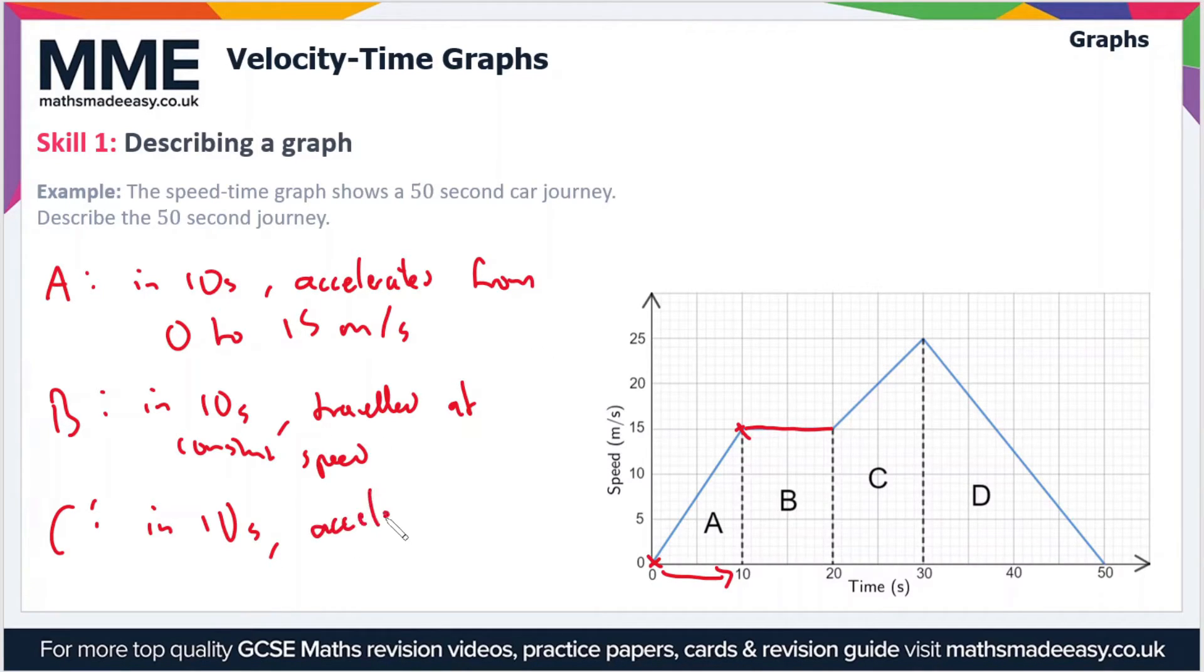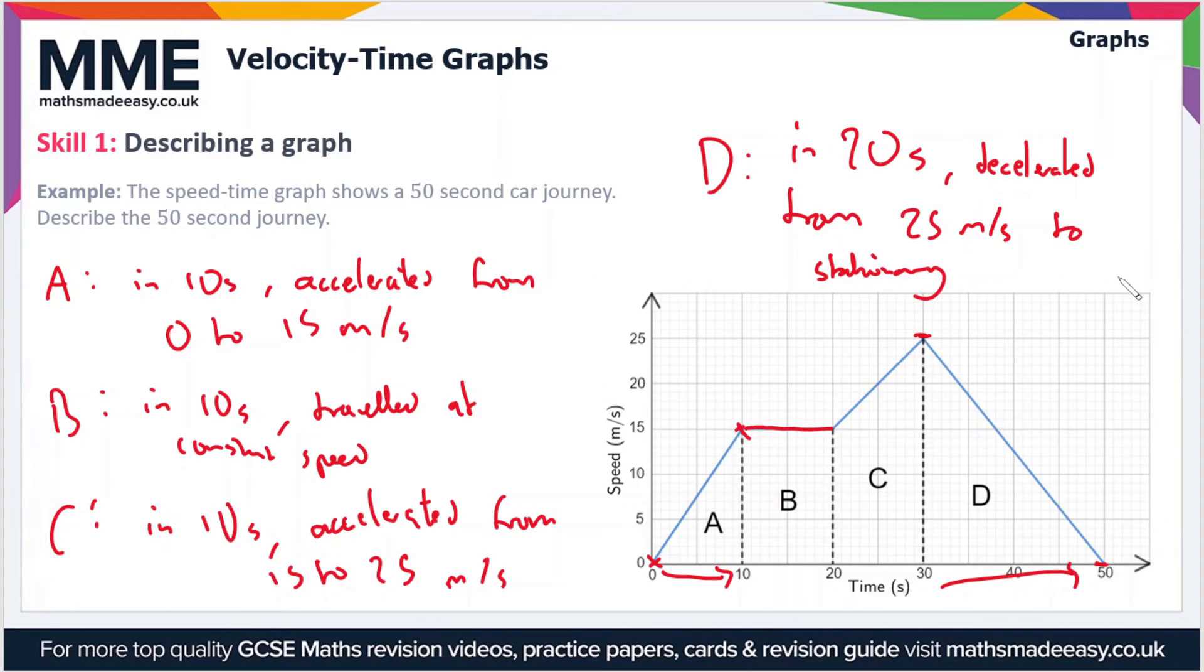Finally, in section D, you can see that we've gone from a speed of 25 meters per second to a speed of 0 meters per second. So that's going from 25 to a standstill, and the time span here is 20 seconds. So we can say in 20 seconds we've decelerated from 25 meters per second to stationary. That's the entire graph described there.